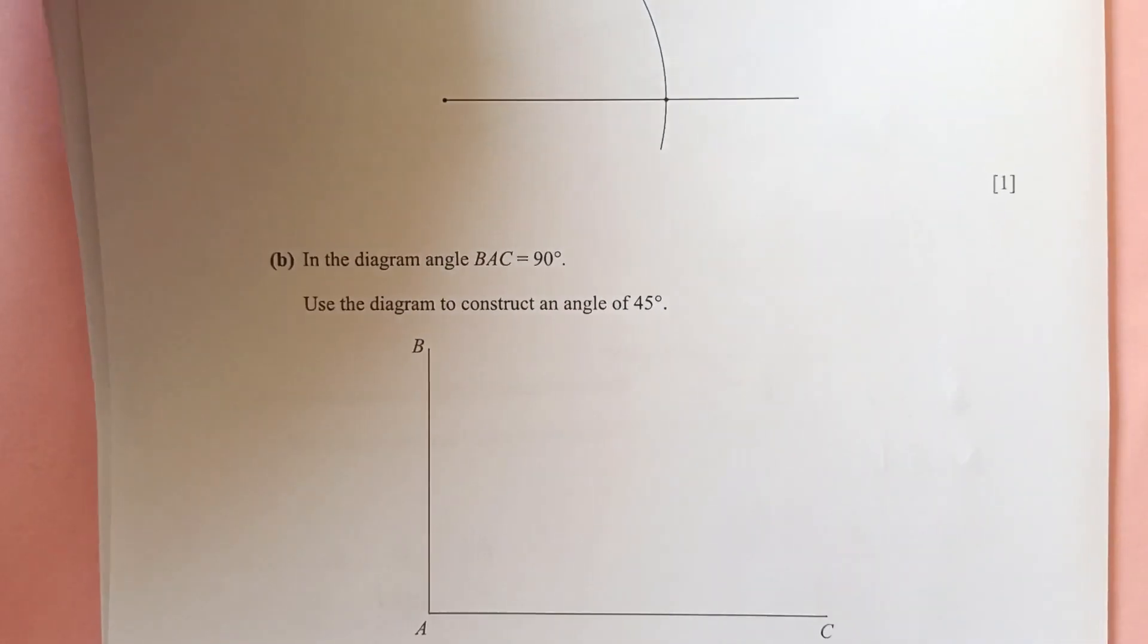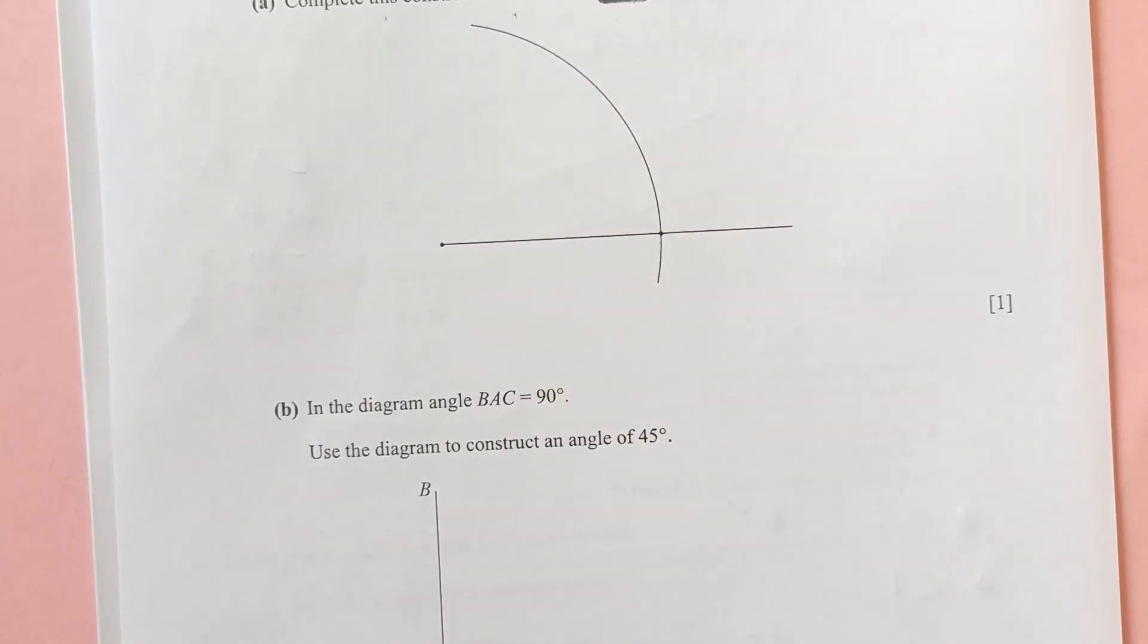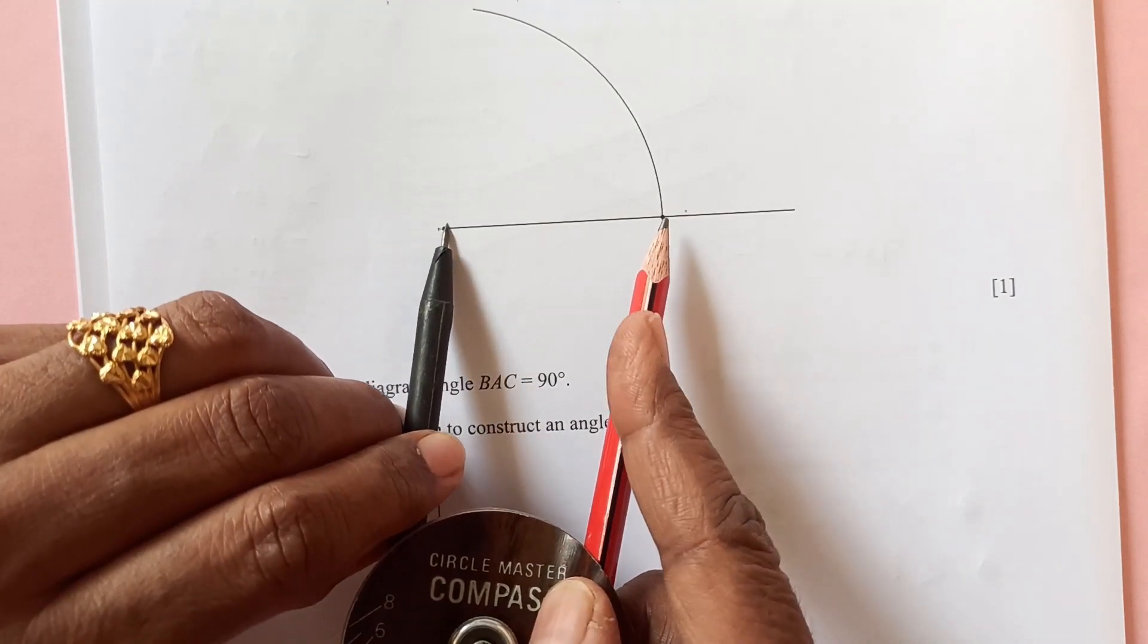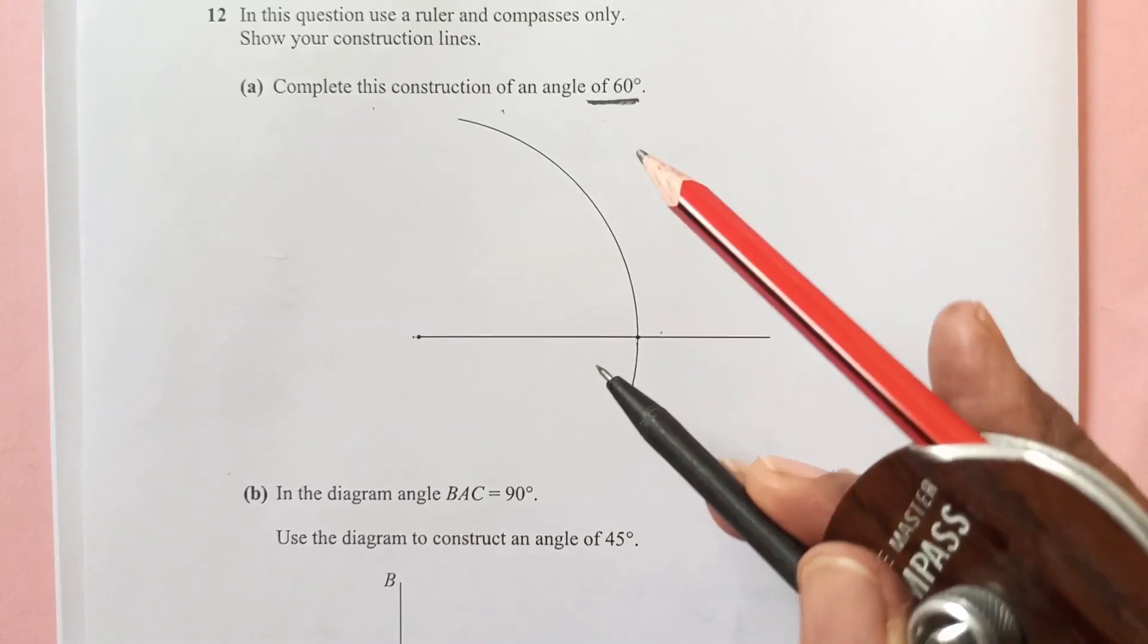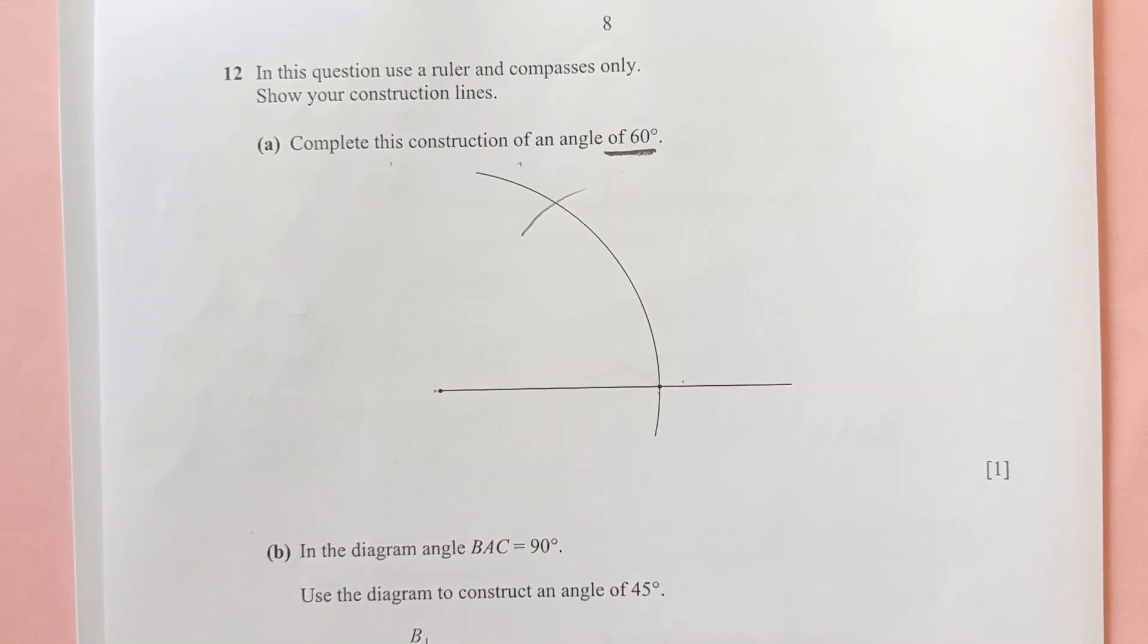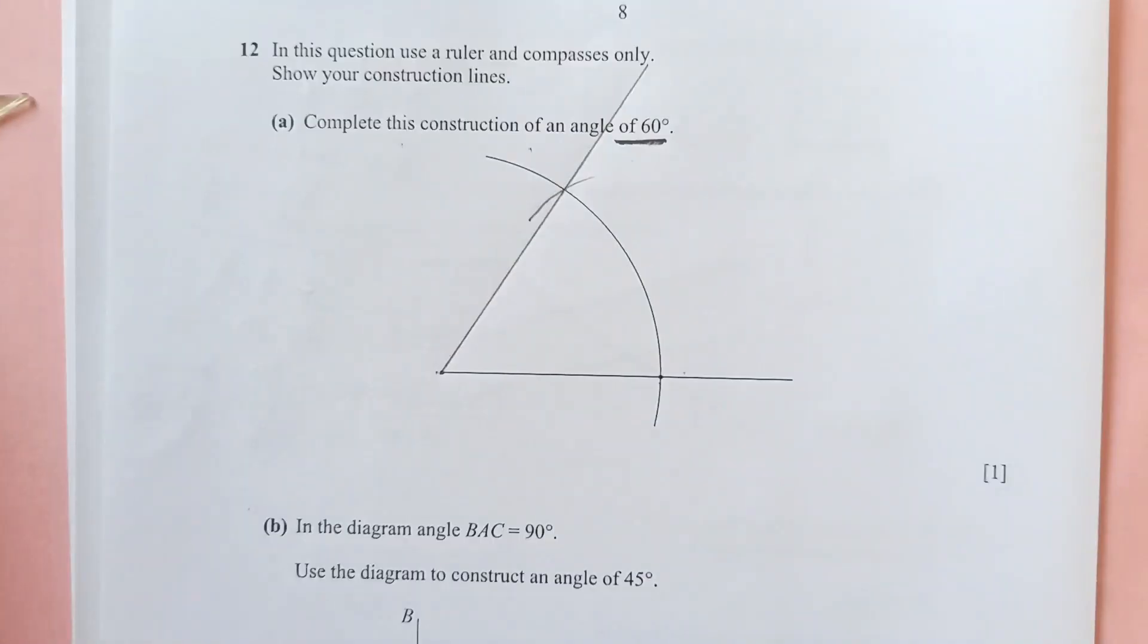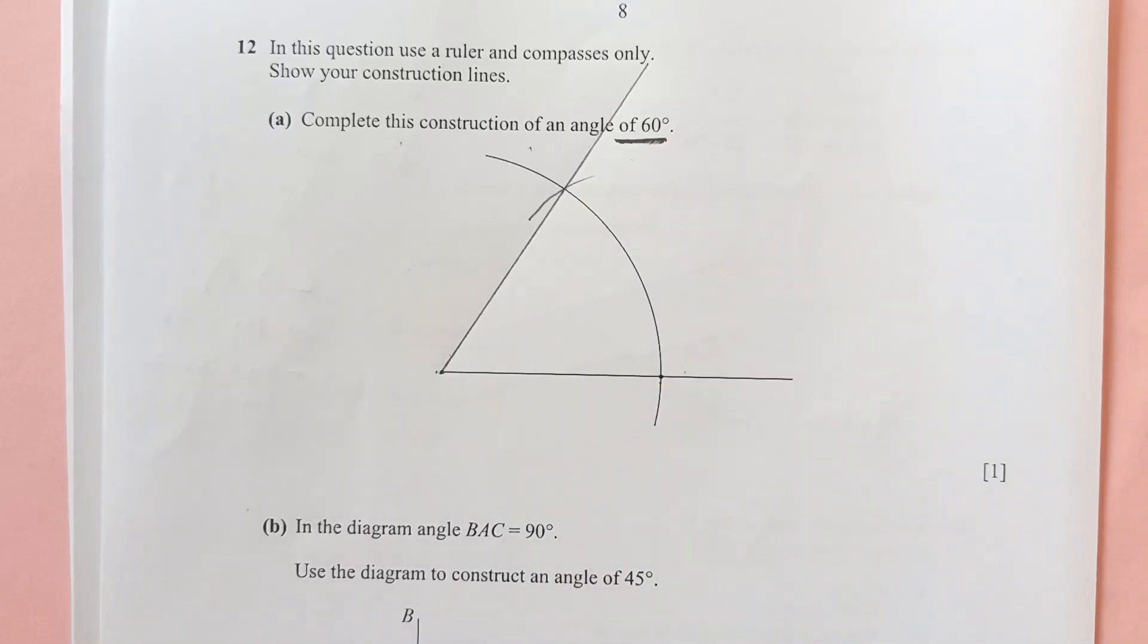Next number 12. In this question, use a ruler and a compass only. Show your construction lines. Complete this construction for angle of 60. To make angle of 60, you must have this arc same. When you take this compass, you can measure it from here to here like this, this arc which is given to you. To make angle of 60, you should have the same arc and then you should have same arc here. Then you are going to join the line to make angle of 60 degrees.